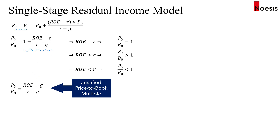When R increases, the price-to-book ratio will decrease. Conversely, if the growth rate G increases, the price-to-book ratio should increase as well.